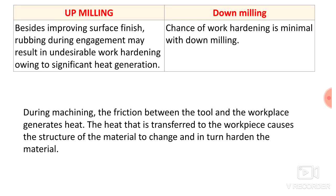The ninth difference — work hardening: besides improving surface finish, rubbing during engagement in up milling may result in undesirable work hardening due to significant heat generation. The rubbing action causes friction, which generates heat, changing the microstructure of the workpiece and increasing its hardness. In down milling, chances of work hardening are minimal because there is no rubbing action and therefore no heat generation.